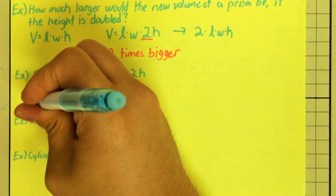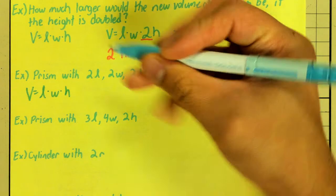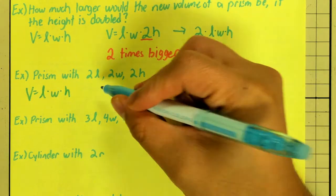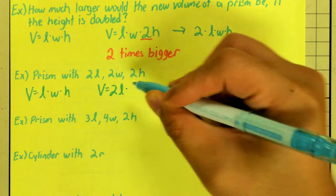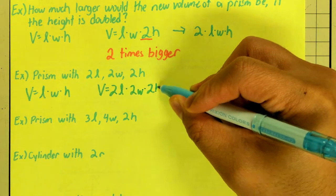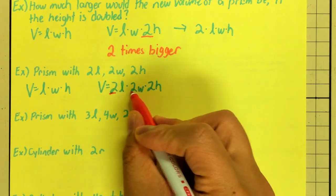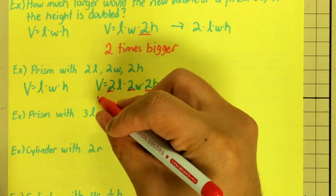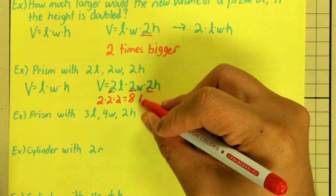Again, my original formula for volume of a prism is length times width times height. My new volume, I have double my length, double my width, and double my height. Again, comparing the old formula with the new formula, I have that 2, that 2, and that 2. So, we can say 2 times 2 times 2 equals 8 times bigger.